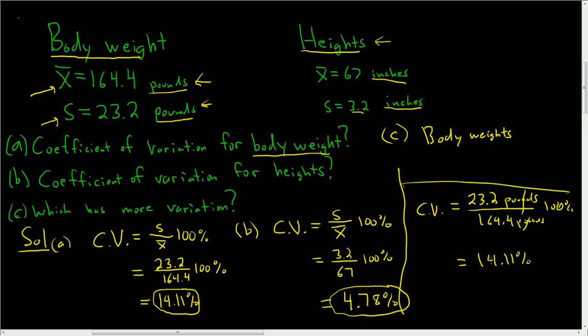So it allows us to compare two data sets when the units are different. Because it's hard to look at this number, 23.2, and this number, 3.2, and just say, oh, this one's bigger, so it has more variation. That was the case in this example, but that's not always the case because the units are different. So it allows us to compare two data sets when the units are different.